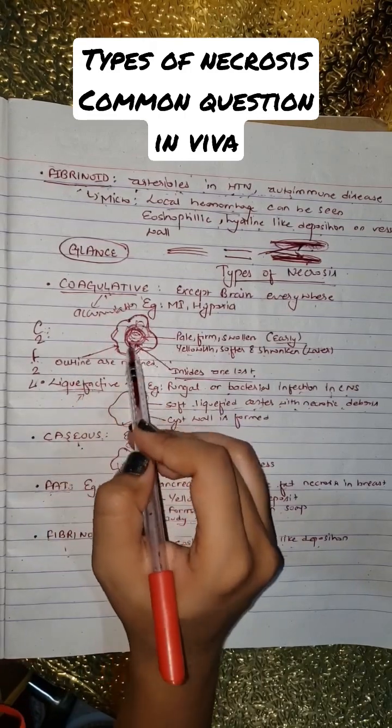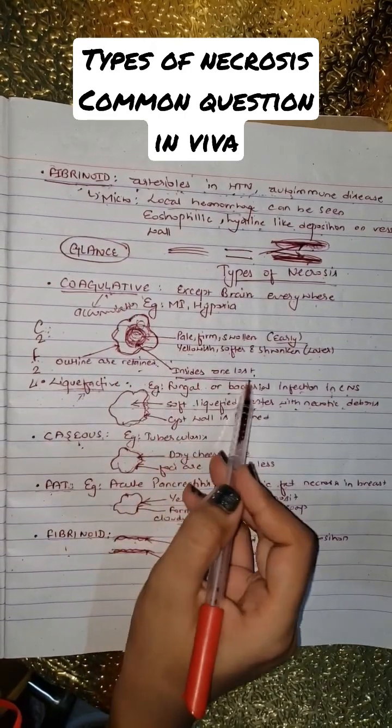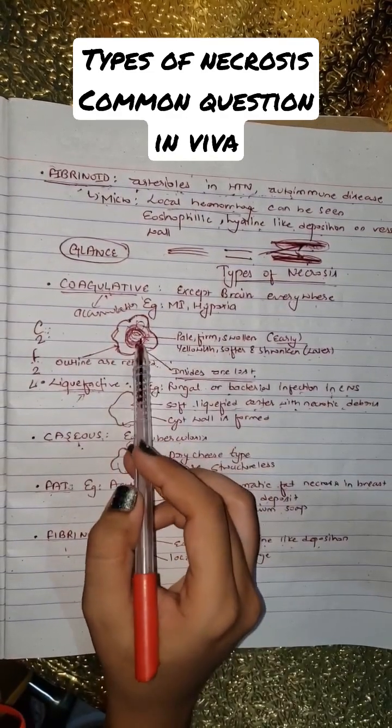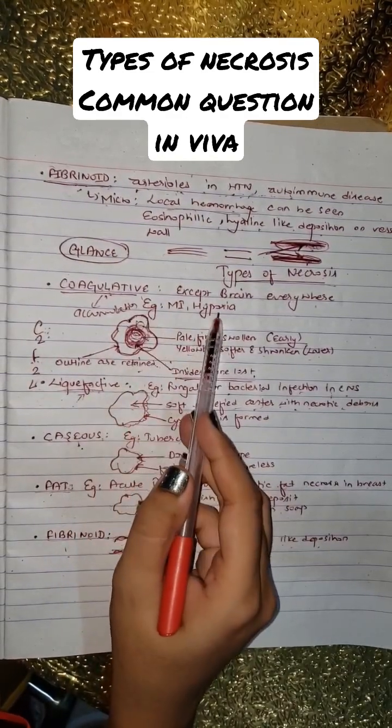Coagulative means the insides are lost but the outline is retained, so we can easily identify what kind of cell it is. Examples are MI and hypoxia.